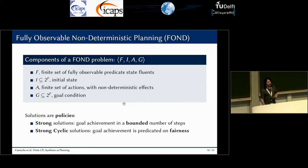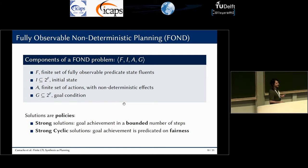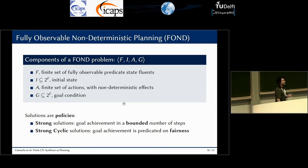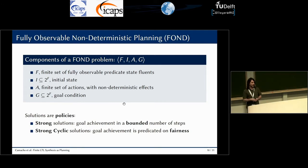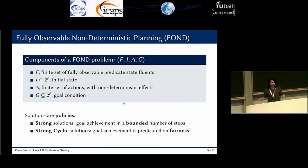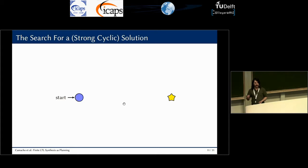We are going to compile LTLf synthesis into fully observable non-deterministic planning — FOND planning. A FOND planning problem is a tuple of F, a finite set of fully observable fluents; I, the initial state; A, a finite set of actions that have non-deterministic effects; and G, the goal condition. Solutions to a FOND planning problem are policies. We are interested in two classes: strong solutions are policies that guarantee goal achievement regardless of non-determinism in a bounded number of steps. Strong cyclic solutions also guarantee goal achievement, but are predicated on a fairness assumption.